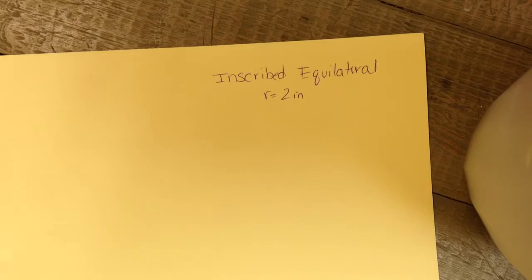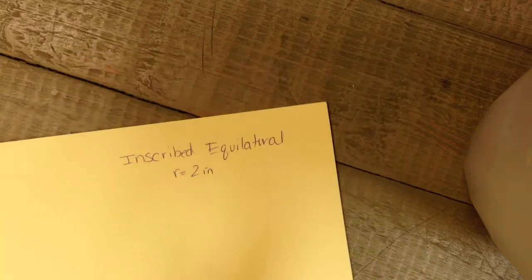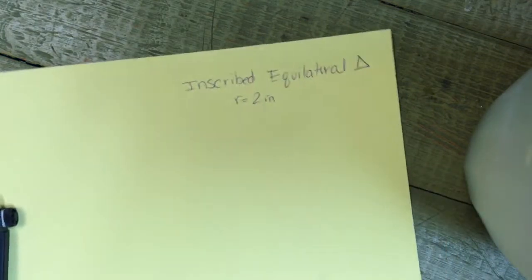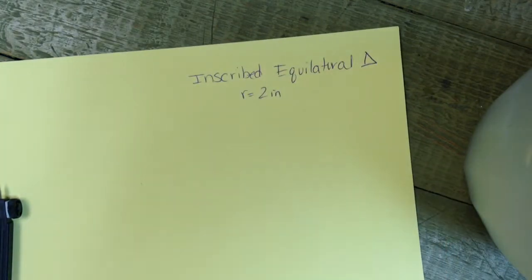Okay, we're going to construct an inscribed equilateral triangle. The radius of the circle is going to be two inches.